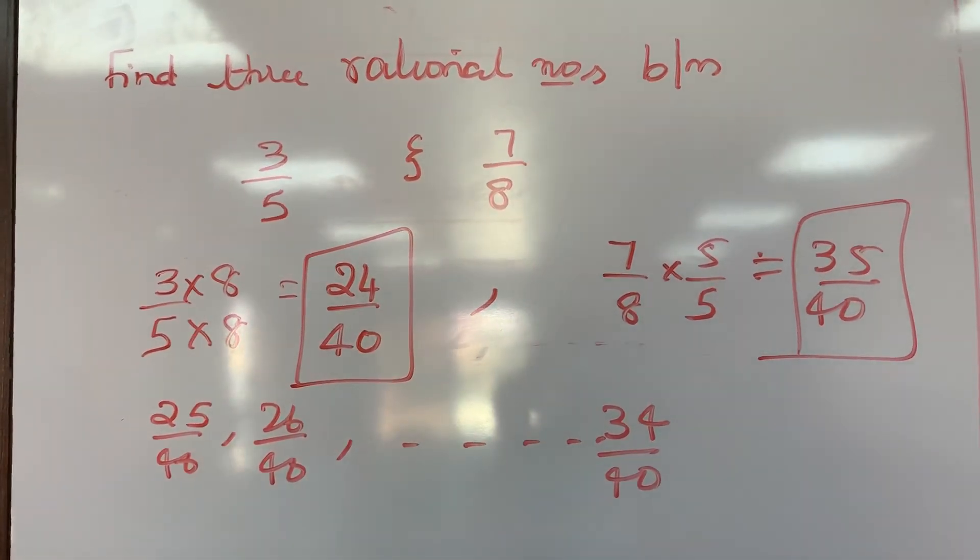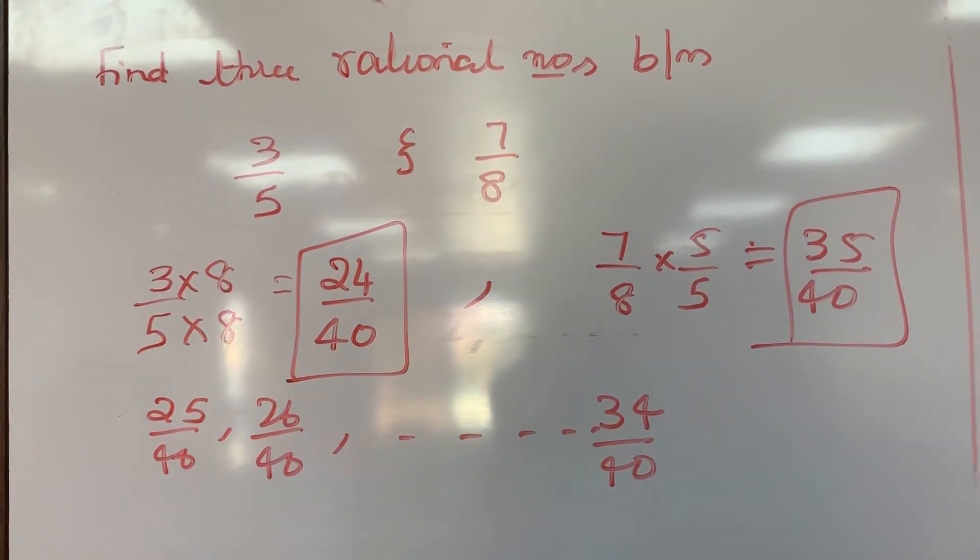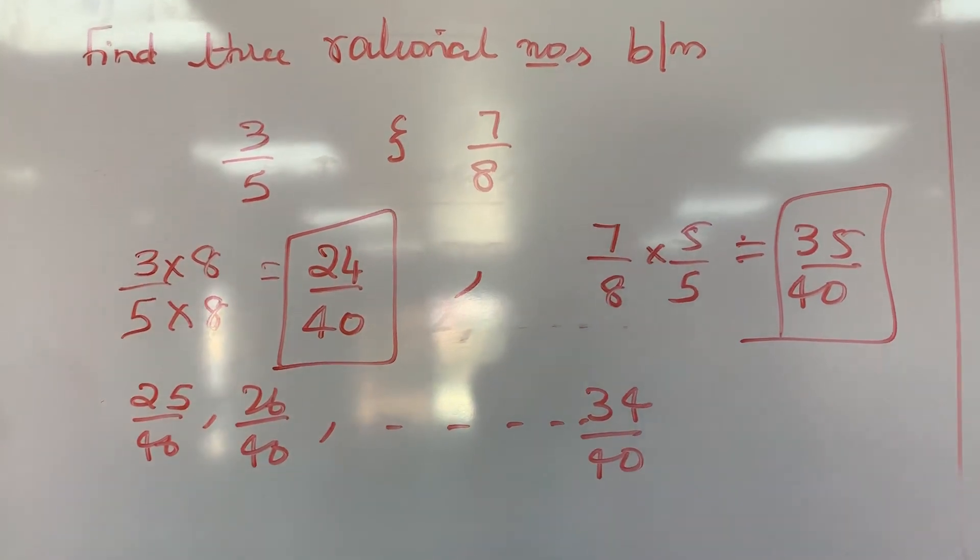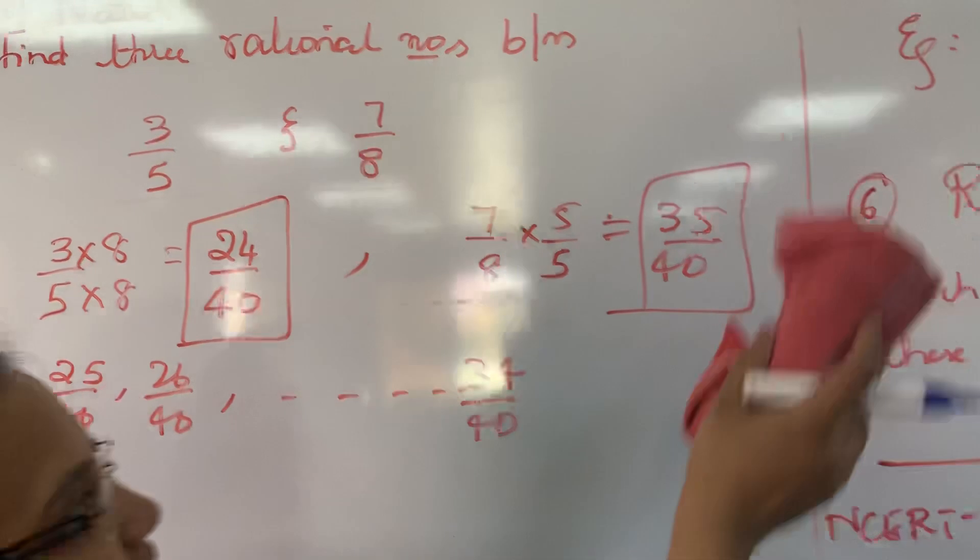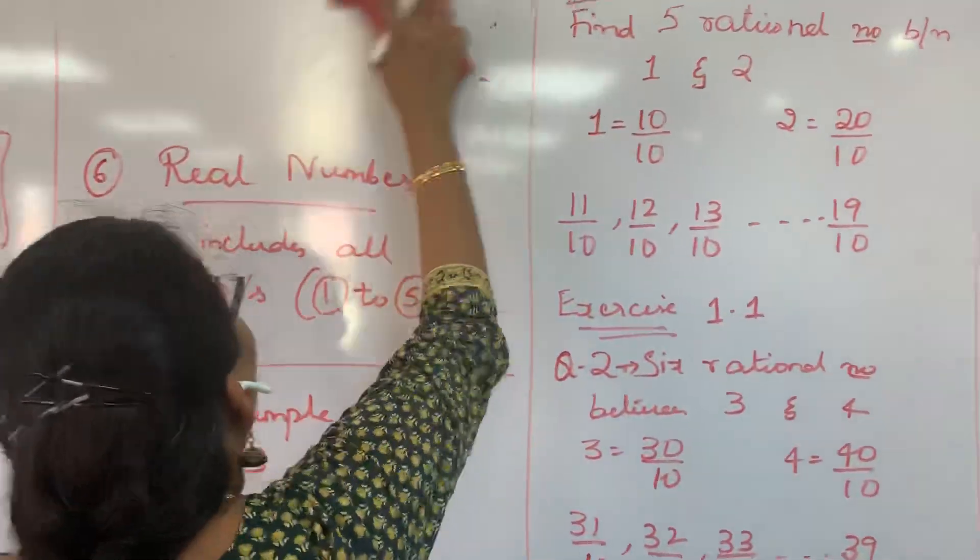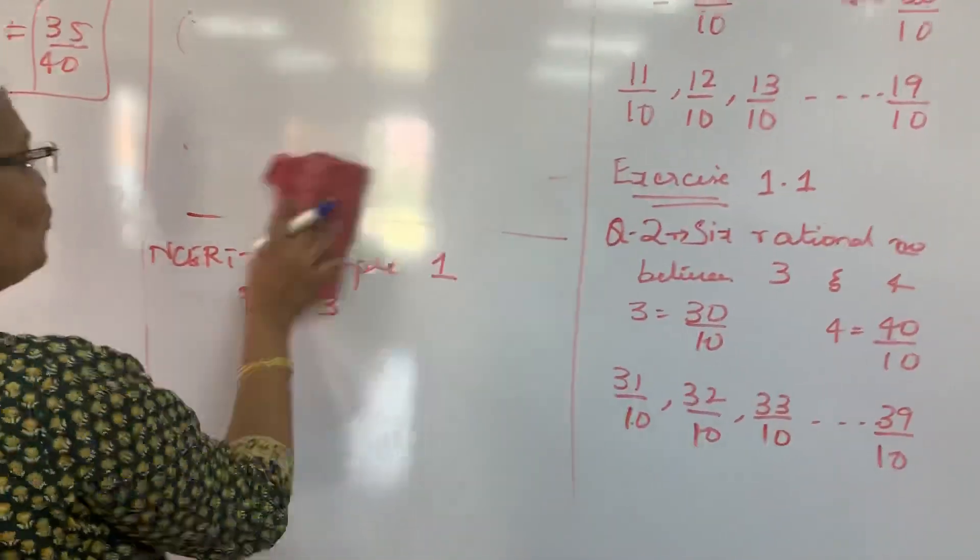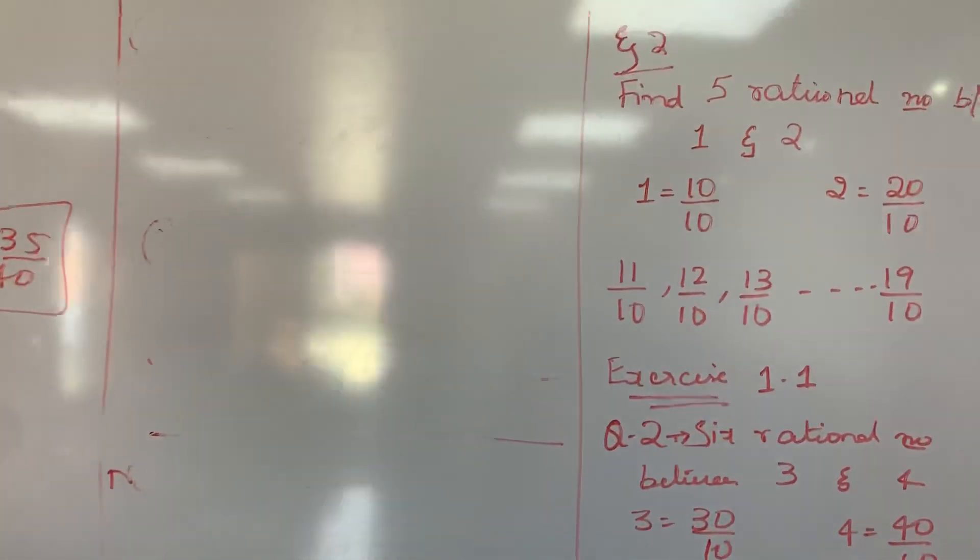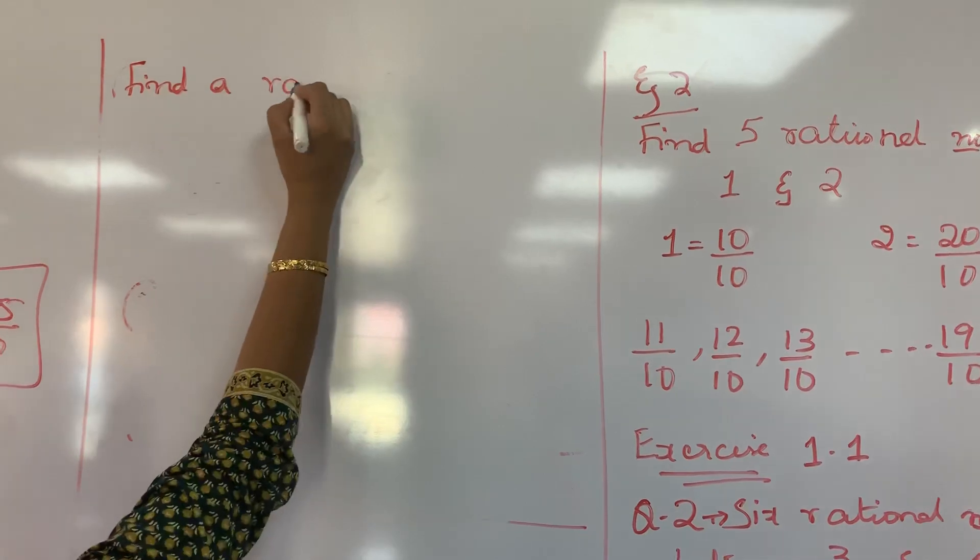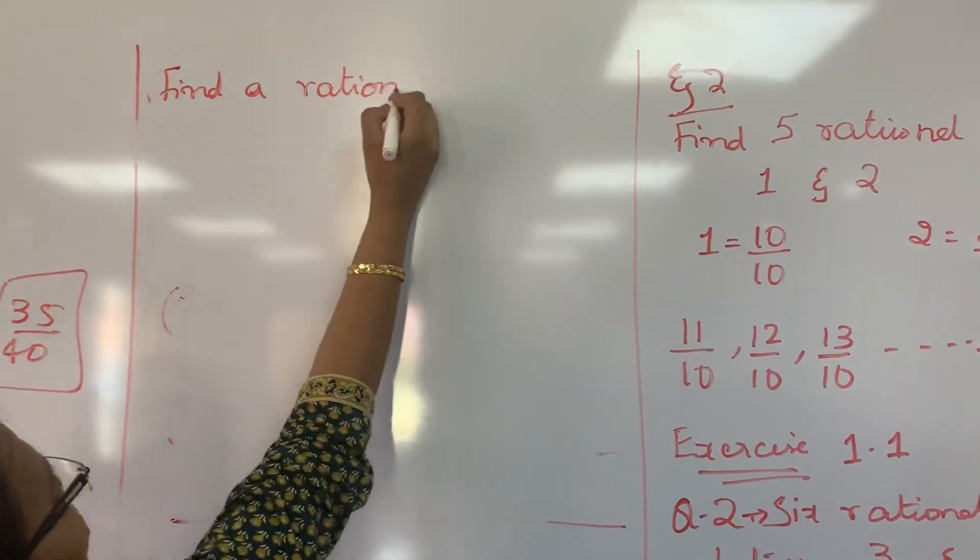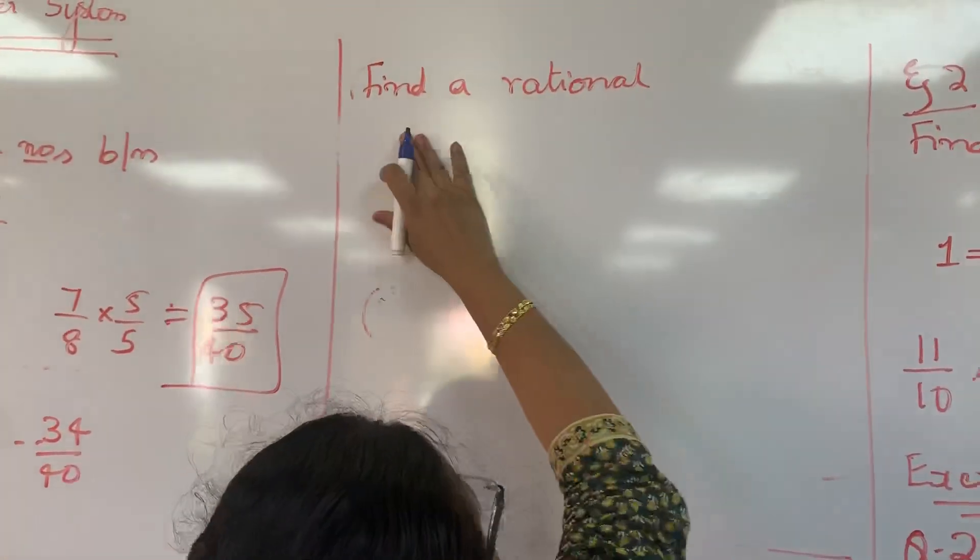I will send few questions based on this. You practice. Meanwhile I will also help you. Now one more concept I have to teach you. The next is sometimes I will ask find one rational number between two numbers. The question will be find a rational number. So how to find a rational number? Whenever you come across there is one rational number, you just take the average.